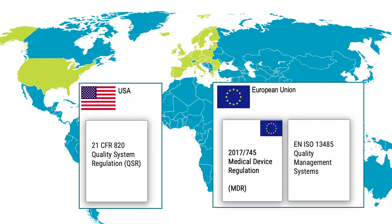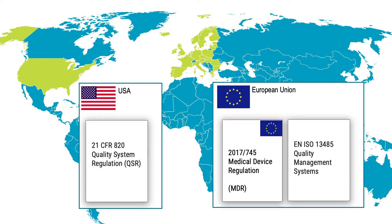But not only that — if you're selling to the European Union, the same kind of requirements apply, but they can instead be found in chapter 7.3 of the EN ISO 13485 standard. Now that we have spoken briefly about what design control is, let's talk about why we should care about design controls.